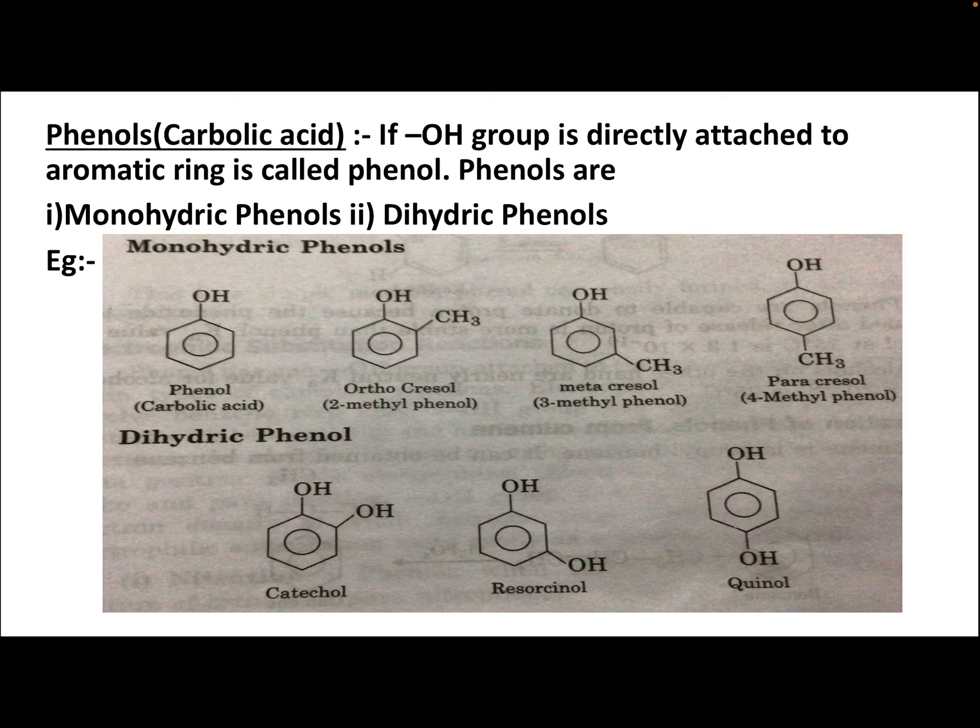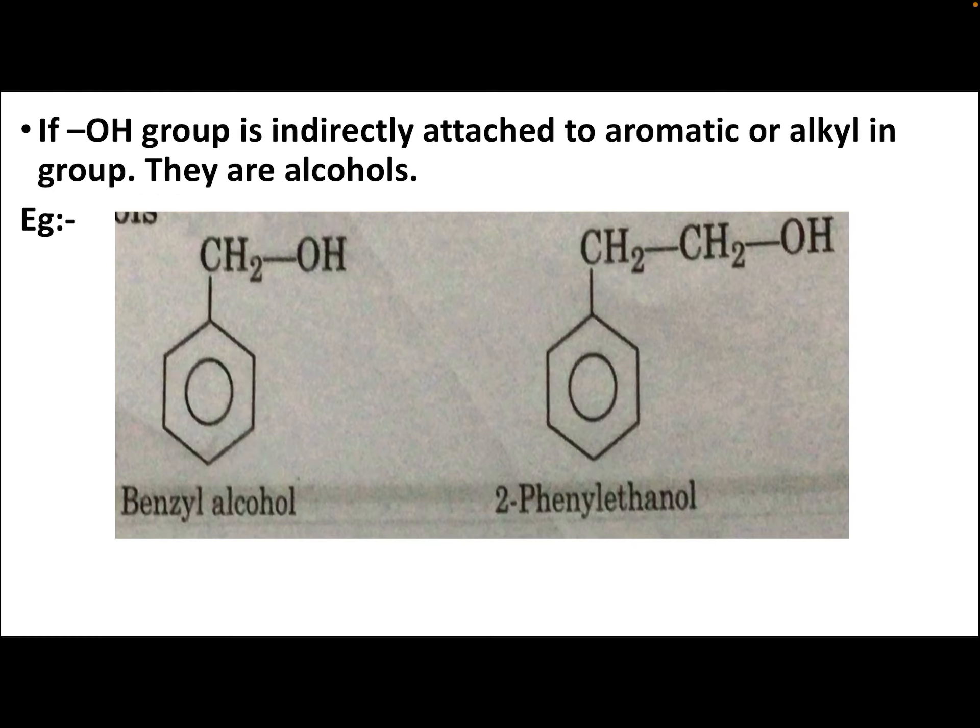Next, dihydric phenols — if two OH groups are attached to a benzene ring, they are known as dihydric phenols. If the OH groups are in the ortho position (1,2 position), it is catechol. If in the 1,3 (meta) position, it is resorcinol. If in the 1,4 position, it is quinol. So examples of dihydric phenols are catechol, resorcinol, and quinol.